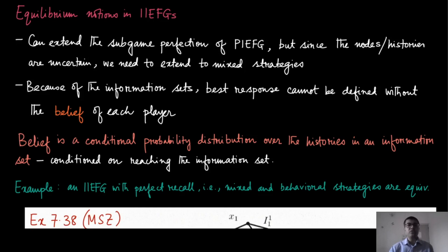In the imperfect information setting we would like to use the same notion, but there is one trouble. Unlike the perfect information extensive form game, not all states are observable by the agents. Players do not know exactly which node or history they are in because of information sets — the player cannot distinguish which node or history they are in. So in order to take the best response in such information sets, it is important to define what the player believes about which of these nodes in an information set the game is currently in, and based on that they can take their actions.